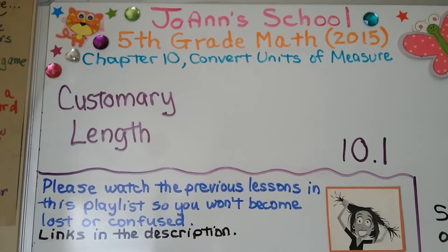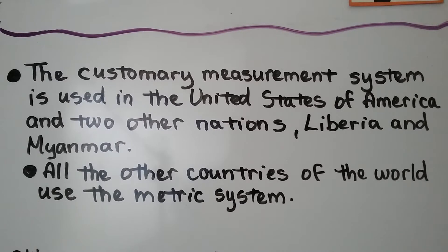We're now in chapter 10 about converting units of measure. This is 10.1, customary length. The customary measurement system is used in the United States of America and two other nations, Liberia and Myanmar. All the other countries of the world use the metric system.